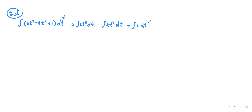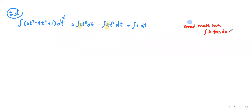Each of the first two terms has a constant multiple — 6 and 4 — so we use the constant multiple rule. The constant multiple rule states that the integral of k times a function is k times the integral of the function. We apply this to the first two terms.